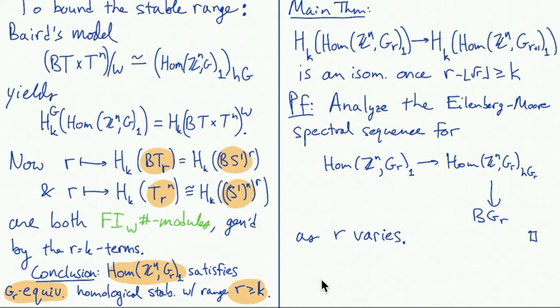So the main theorem now is that if you go back to ordinary cohomology, then as you increase the rank of the group by one, you get an isomorphism, not quite in the same range, but at least if you increase the range enough so that r minus the square root of r is at least k. And so the way that this proceeds is through an analysis of the Eilenberg-Moore spectral sequences. So you have a fibration from the homotopy orbit space down to BG with the representation space or this space of commuting tuples as the fiber. And as you increase the rank of the group, you get a map of spectral sequences.